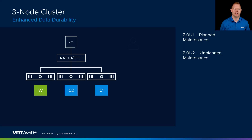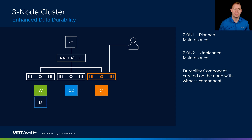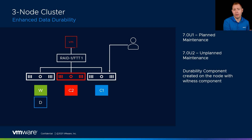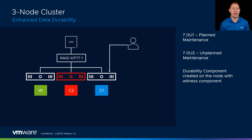You might be thinking: does this work with a 3-node cluster? The answer is yes, but we change how we do it slightly. With a 3-node environment, when our administrator puts a host in maintenance mode with Ensure Accessibility, we create our durability component on the same node as our witness — not a perfect solution, but we still create that durability component. If we had a failure on the host with component 2, we'd be able to resync from that durability component to component 1 once we bring it out of maintenance mode, allowing us to have access to our objects.